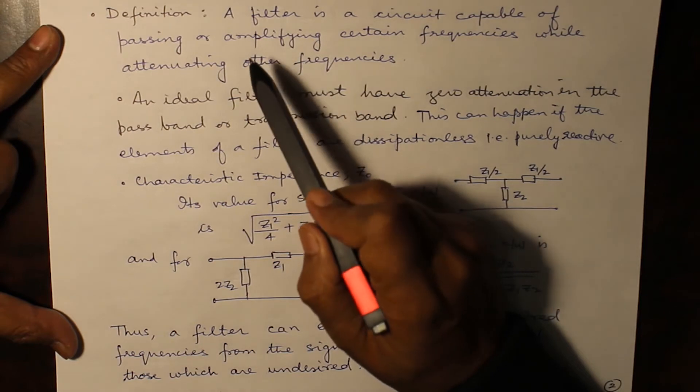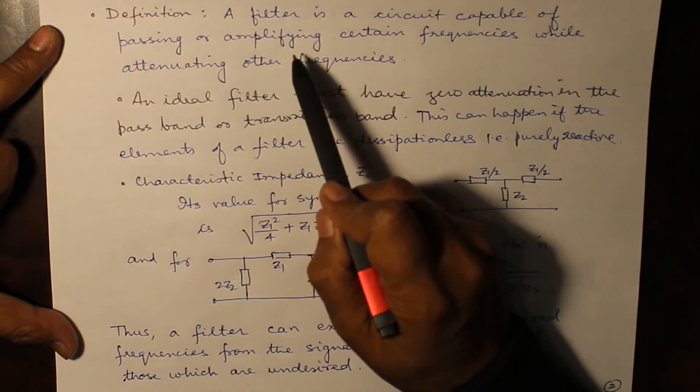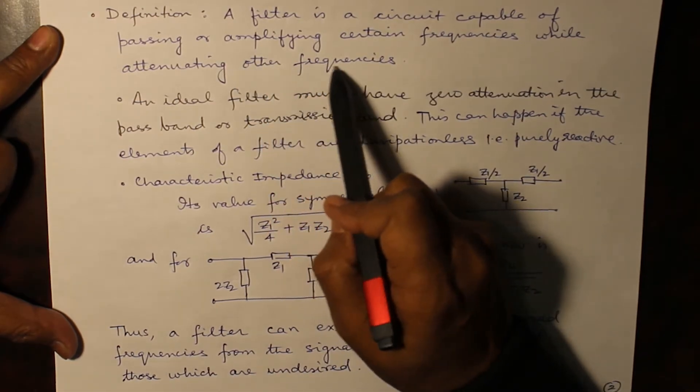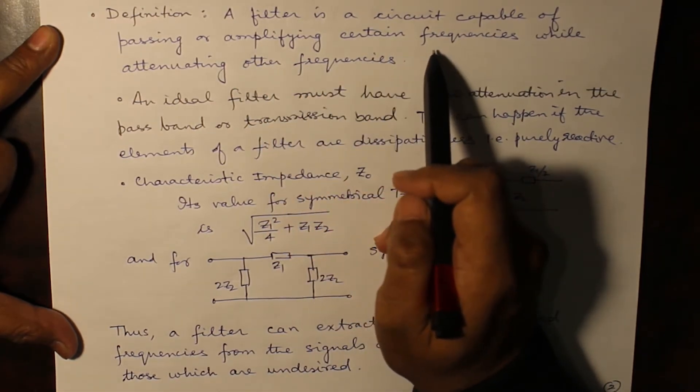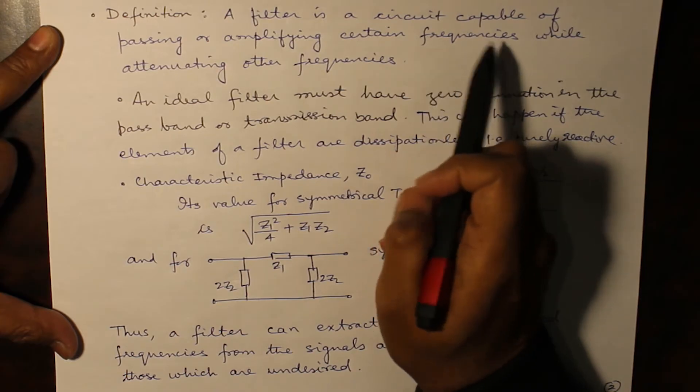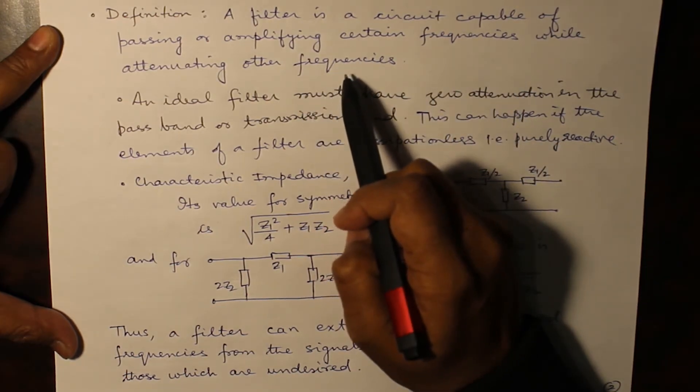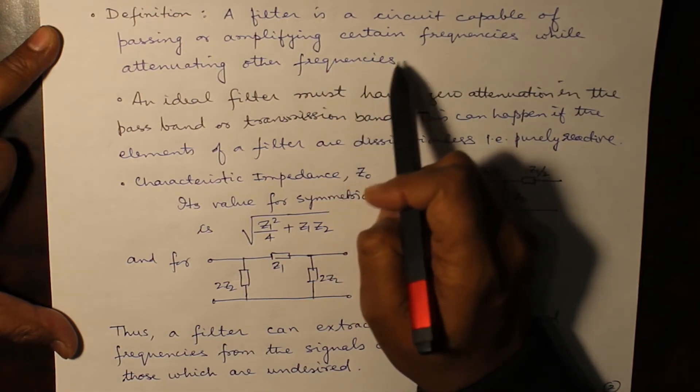Now, let us see the definition of a filter. A filter is a circuit which is capable of passing or amplifying certain frequencies, it can be a range of frequencies, while attenuating other frequencies. What does this mean?